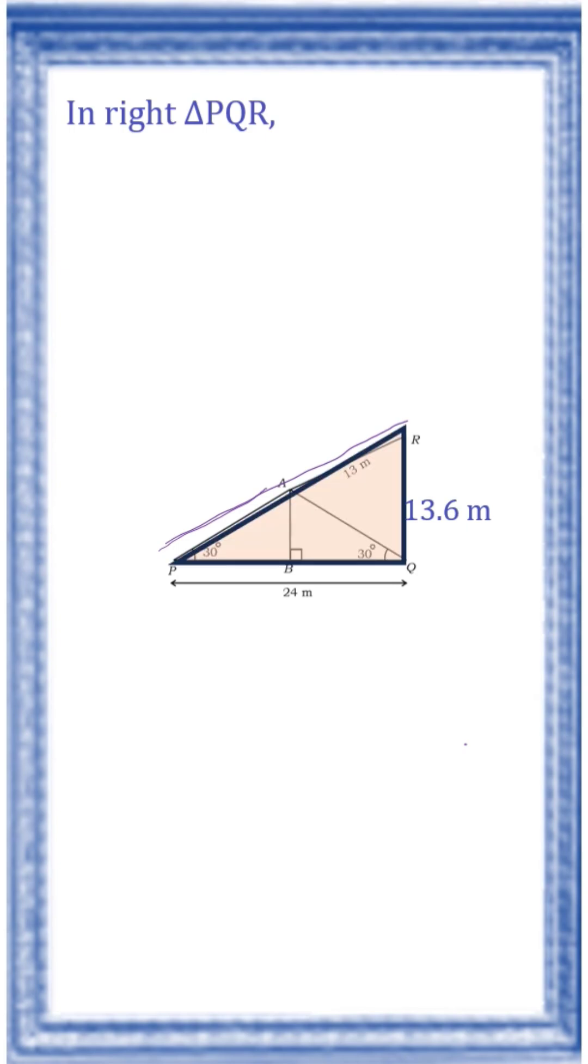In triangle PQR, sin 30 is equal to opposite by hypotenuse, RQ by PR. Let us substitute the values. Sin 30 is half, RQ is 13.6 by PR. So PR is equal to 2 into 13.6, that is equal to 27.6 meter.